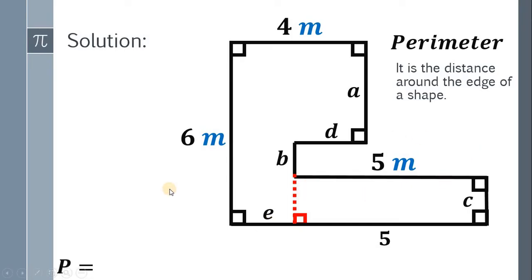The perimeter of this figure must be the sum of all sides. We have 4, plus A, plus D, plus B, plus 5, plus C, plus 5, plus E, and plus 6. So we have the perimeter: 4, plus A, plus D, plus B, plus 5, plus C, plus 5, plus E, plus 6.